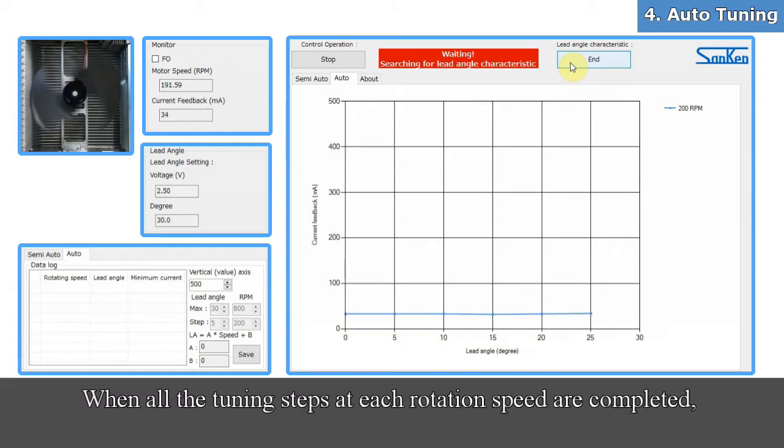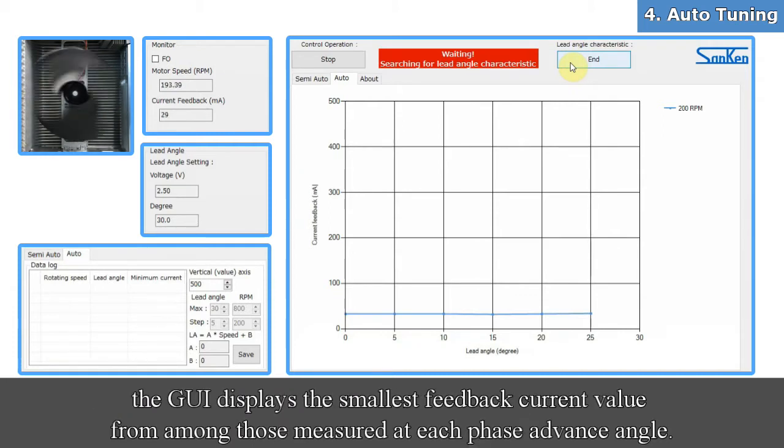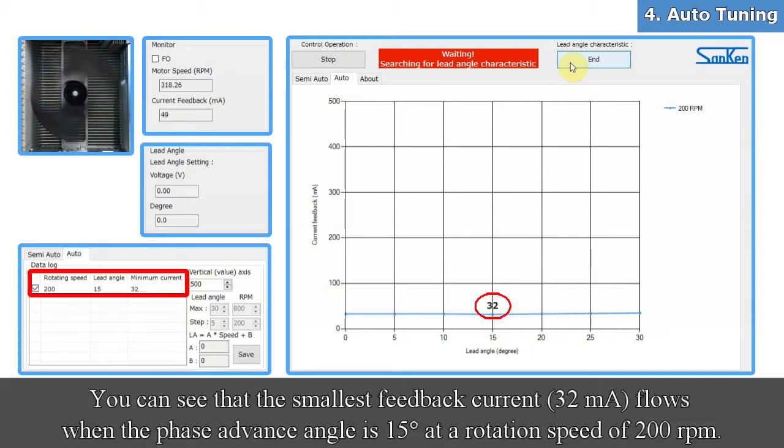When all the tuning steps at each rotation speed are completed, the GUI displays the smallest feedback current value from among those measured at each phase advance angle. You can see that the smallest feedback current flows when the phase advance angle is 15 degrees at a rotation speed of 200 RPM.